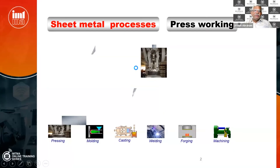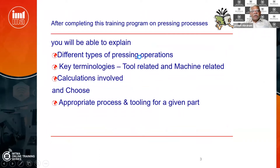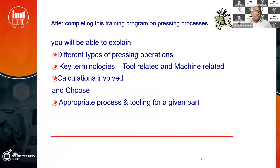The first topic is what are the sheet metal processes. What are the different types of processes we have in sheet metal processing, which includes different types of pressing operations, key terminologies, tool-related and machine-related topics, and there are a lot of calculations involved. We are going to talk about calculations and you will gain general knowledge about how to calculate the press tool edge, etc.